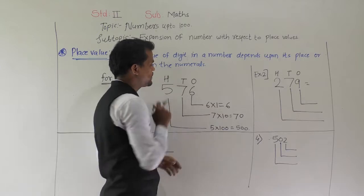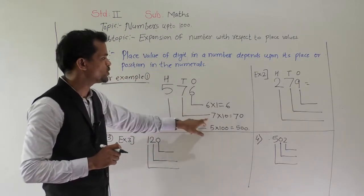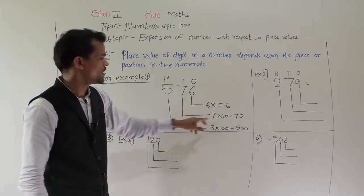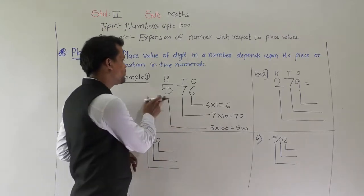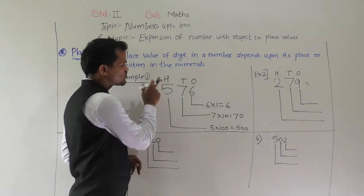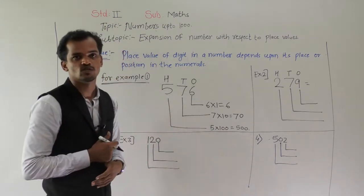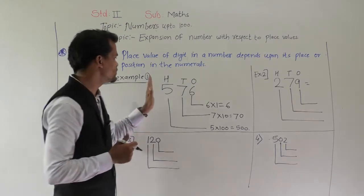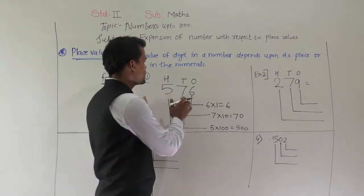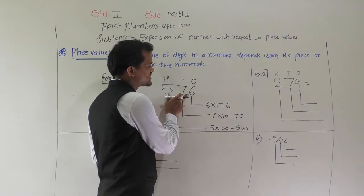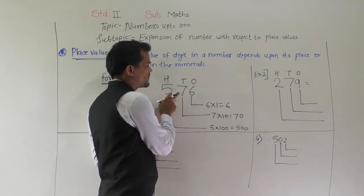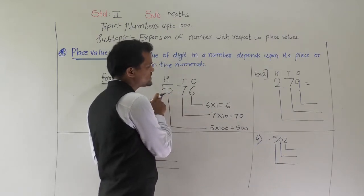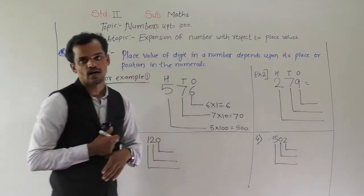7 comes at tens place, so 7 times 10 is equal to 70. And 5 comes at hundreds place, so 5 times 100 is equal to 500. So in this number, place value of 6 is 6, place value of 7 is 70, and place value of 5 is 500.